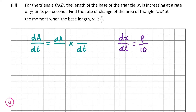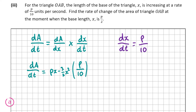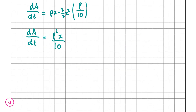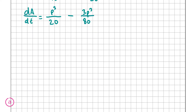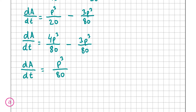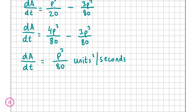So dA/dt equals dA/dx times dx/dt. We worked out dA/dx in part 2, which was px minus 3/2 x squared, and dx/dt is p/10. Multiplying these out gives p²x/10 minus 3px²/20. Substituting x = p/2, we get p²(p/2)/10 minus 3p(p/2)²/20, which gives p³/20 minus 3p³/80. Putting both terms over denominator 80 gives 4p³/80 minus 3p³/80, leaving dA/dt equals p³/80 units squared per second. That's our answer for A part 3.